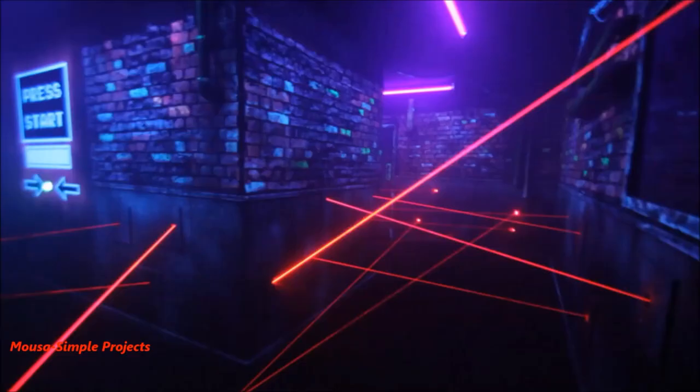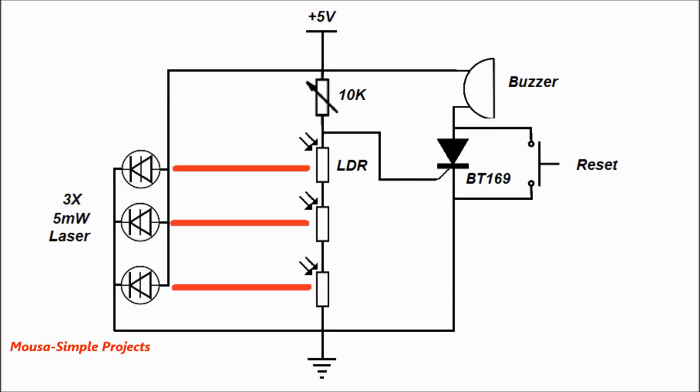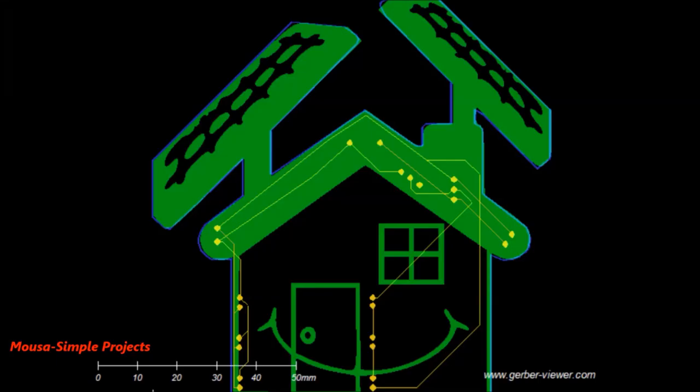To make it difficult for the thief to go through the door without cutting the laser beam. In this case, by cutting only one laser beam, the alarm turns on. I converted this circuit to a PCB layout.